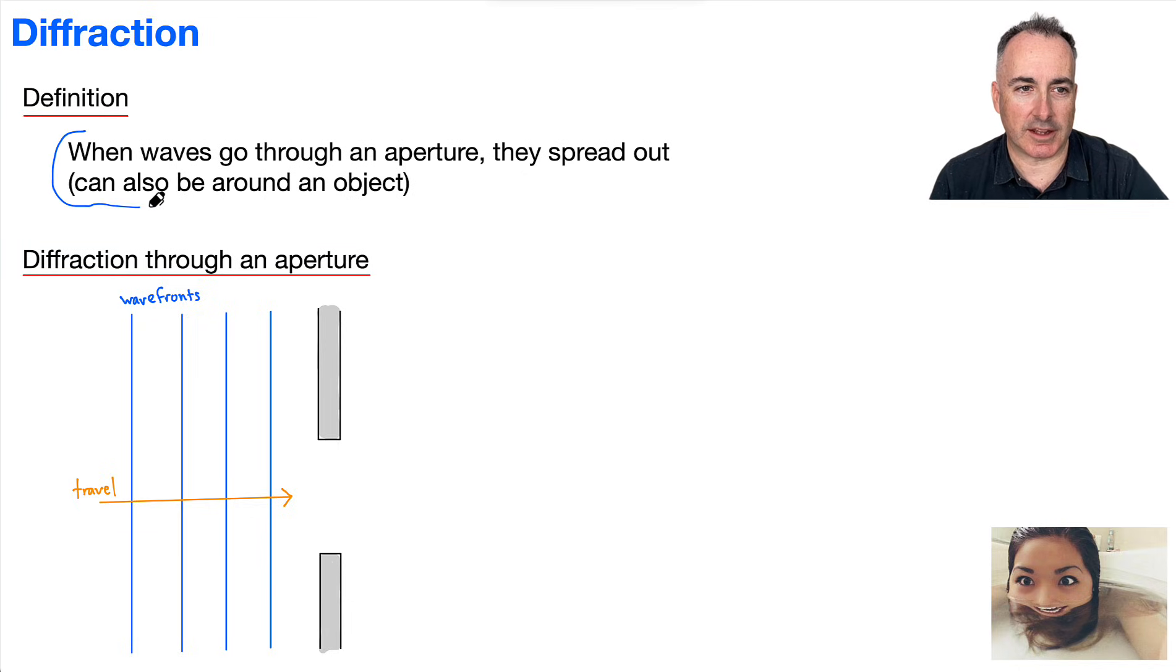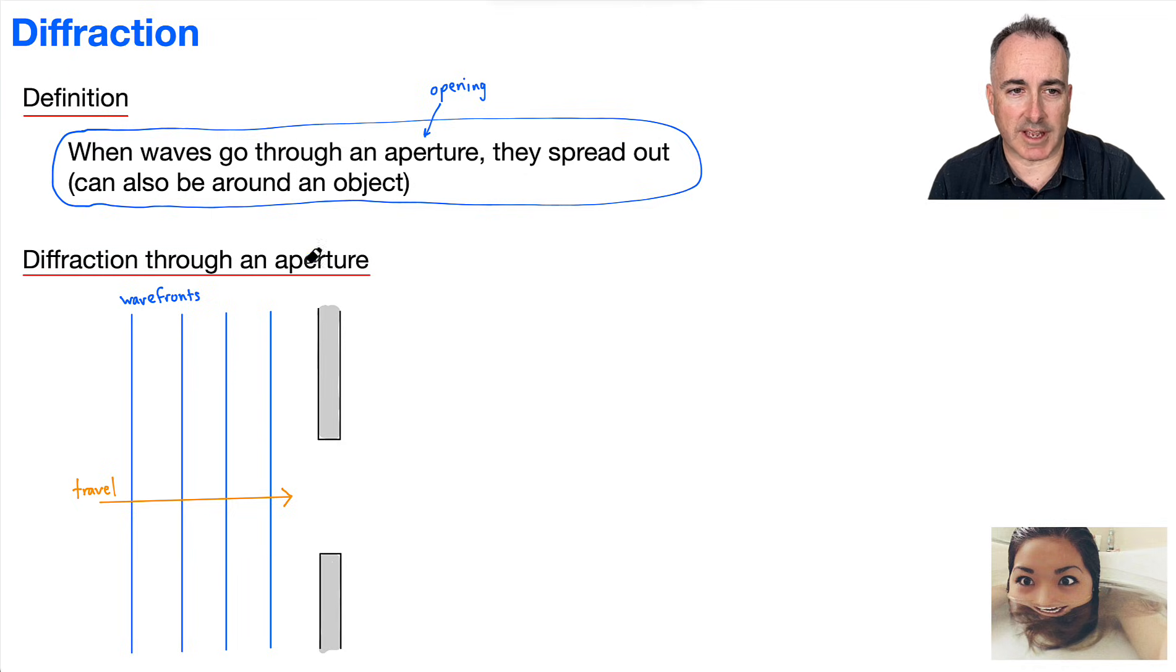Diffraction, we can define it as when a wave goes through an aperture, they're going to spread out. What do I mean by an aperture? I mean like an opening, some sort of hole or something like that. So for example, if these waves are going through this opening here, they're going to spread out. Now this could also be for going around an object instead of going through an aperture, but let's just look at this example. So I've drawn some wave fronts, and this is the direction of travel of these waves. I know my drawing isn't perfect, but there we go. The idea here is that notice this one right here.